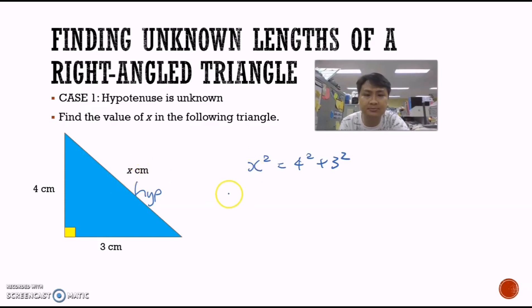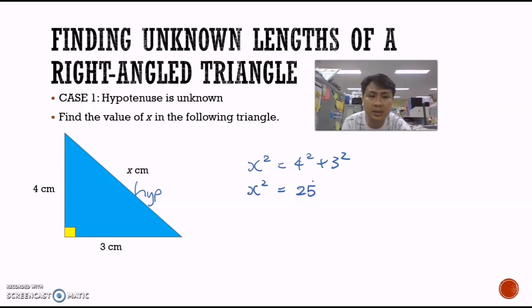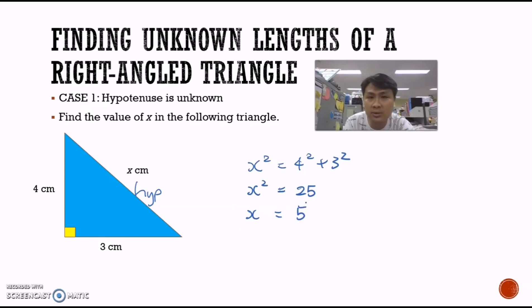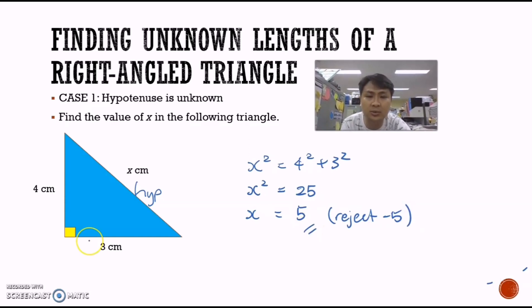We must always start off with the hypotenuse. When the hypotenuse is unknown, we apply the formula and calculate: x squared equals 3 squared plus 4 squared, which gives 25. To find x, we take the square root, giving x equals 5. When we take the square root we have two answers — one positive, one negative — but because length cannot be negative, we reject negative 5. Therefore x equals 5.